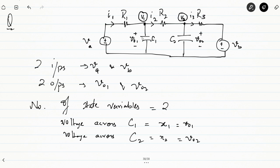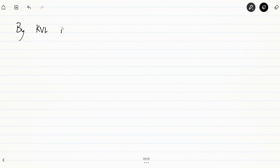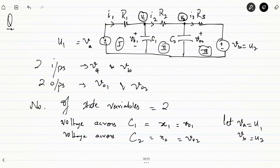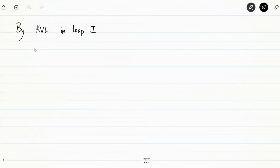By KVL, representing this as loop 1, loop 2, and loop 3 — let VA be U1 and VB be U2, the two inputs. By applying KVL in loop 1, we have U1 is equal to I1·R1 plus V01, which is X1.